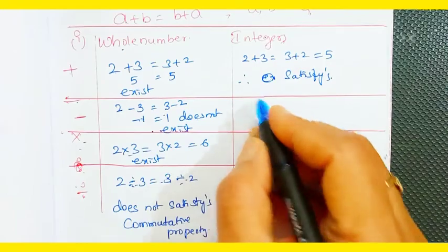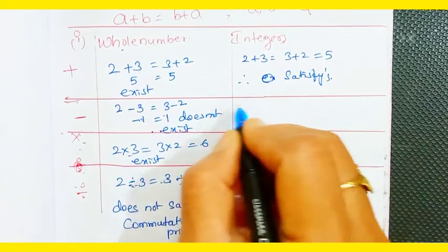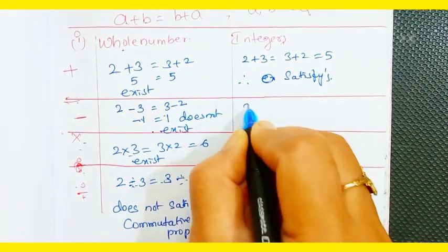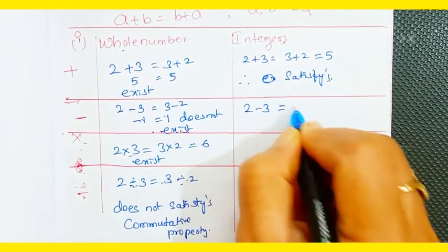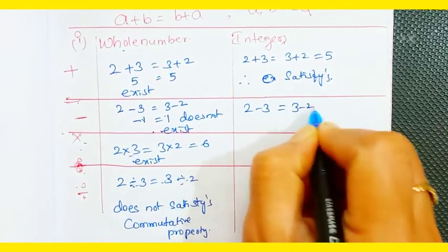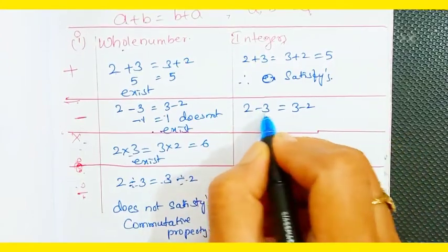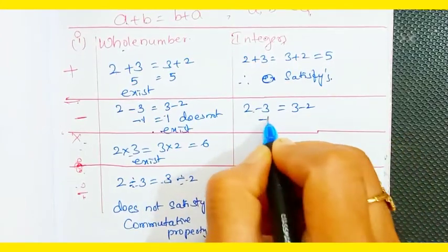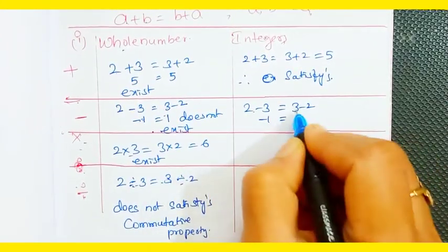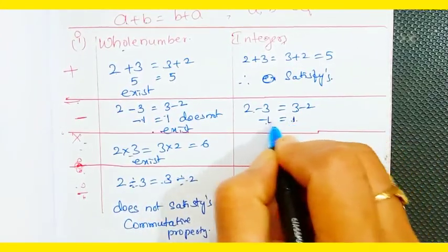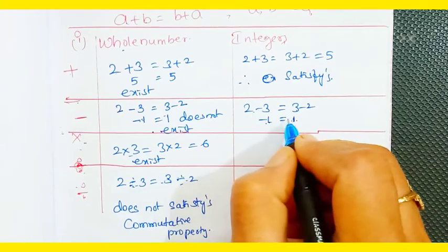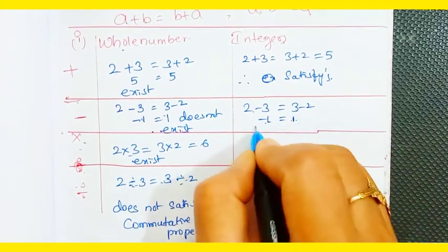Under subtraction for integers: 2 - 3 versus 3 - 2 gives -1 and 1, which are not equal. So it is not commutative — the property does not satisfy for integers under subtraction.